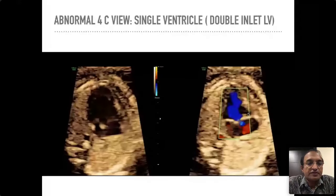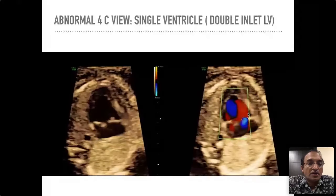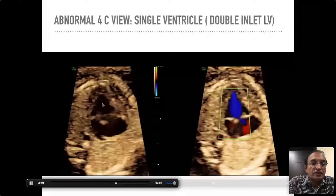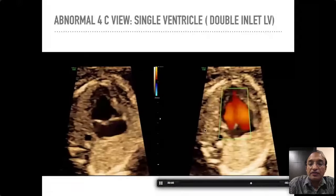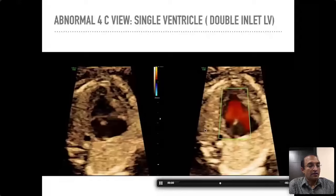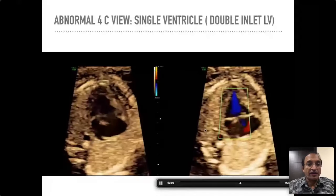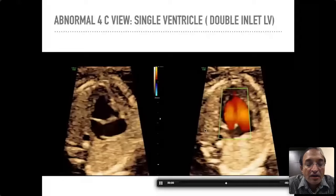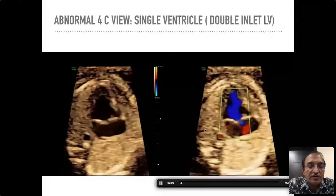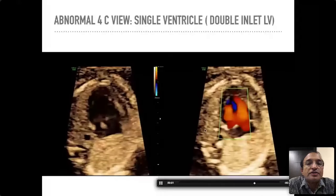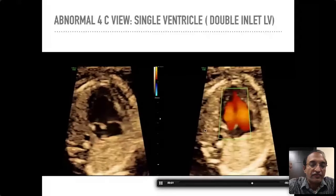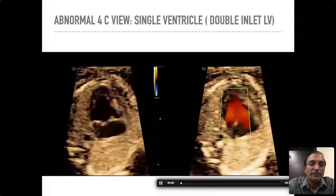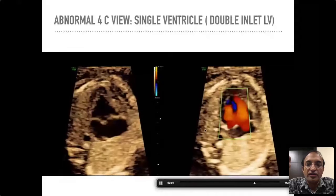Here is one more condition shown in the four-chamber view with color. You see two atria and just one single ventricle — both valves are opening into the same ventricle. This is another type of single ventricle called the double inlet type, which is a common form. So, the different types of single ventricle covered include HLHS, pulmonary atresia with intact septum and hypoplastic RV, tricuspid atresia, and double inlet left ventricle. The double inlet LV and tricuspid atresia tend to have the best prognosis because in both cases the main ventricle is the left ventricle, whereas in hypoplastic left heart the main ventricle is the right ventricle — which is acceptable in utero but after birth we want the left ventricle, as it is the stronger ventricle.